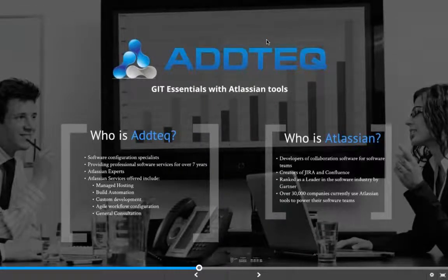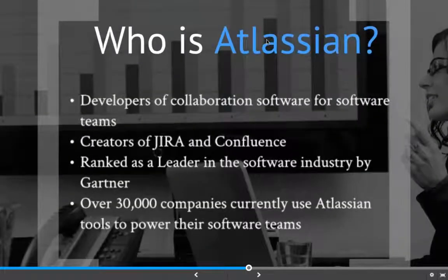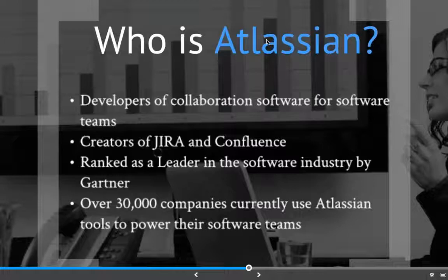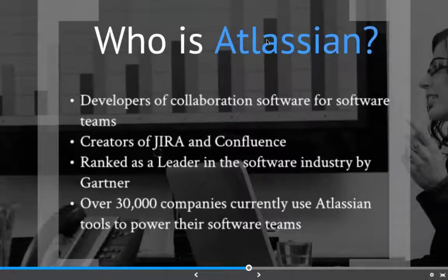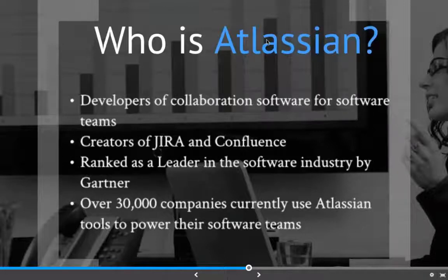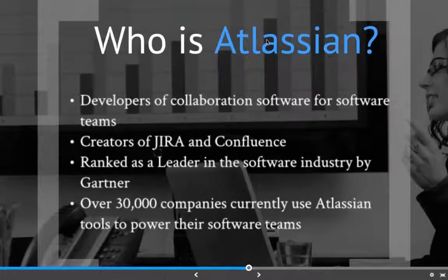Next, who is Atlassian? I assume that a lot of our attendees today might already be familiar with Atlassian, but if not, they are most well-known as the creators of Jira and Confluence. In general, they specialize in creating software that empowers collaboration and achieving a more agile process for development teams. Jira and Confluence might be their most well-known tools, but they also create a host of other tools, especially for software development teams, and we will be going over some of these today. They are also recognized as a leader in the software industry by Gartner, and at present their products are used by more than 30,000 companies worldwide, ranging from small startups all the way through the largest enterprises.